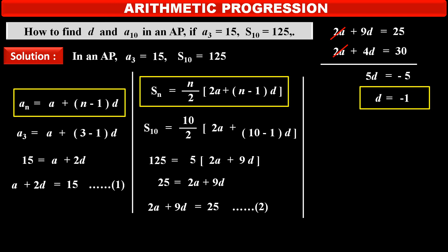Substituting this value in equation number 1, we get first term A plus 2 into minus 1 is equal to 15. Solving this, we get A is equal to 17. So, the first term of this AP is 17.